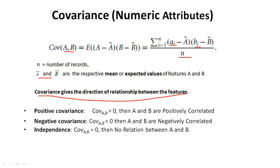Covariance gives the direction of the relationship between features. If the covariance of A and B is greater than 0, then A and B are positively correlated. If the covariance is less than 0, then A and B are negatively correlated. If it is equal to 0, we can say they are independent — there is no relation between A and B.